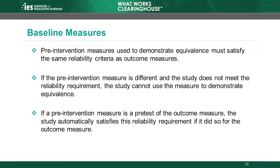If reliability information is unavailable for a pre-intervention measure, or the reliability is below the acceptable level, the study cannot use the measure to demonstrate equivalence. Sometimes a pre-intervention measure is a pretest score of the outcome measure. In this case, the study automatically satisfies the reliability requirement for the pre-intervention measure, if it did so for the outcome measure.